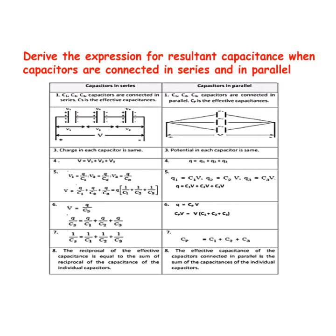Let Cs be the effective capacitance of the series combination. It stores a charge Q when a voltage V is applied, so V is equal to Q divided by Cs. Therefore Q/Cs is equal to Q/C1 plus Q/C2 plus Q/C3. Dividing throughout by Q: 1/Cs is equal to 1/C1 plus 1/C2 plus 1/C3.